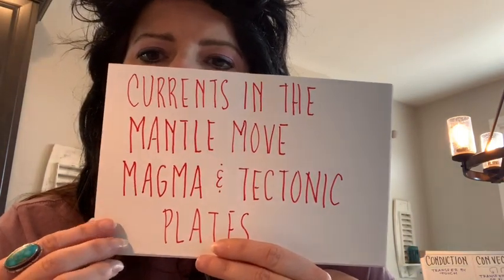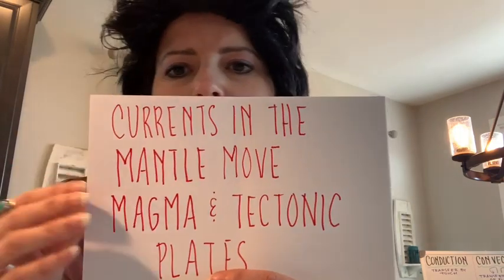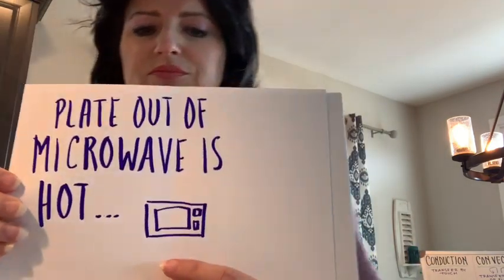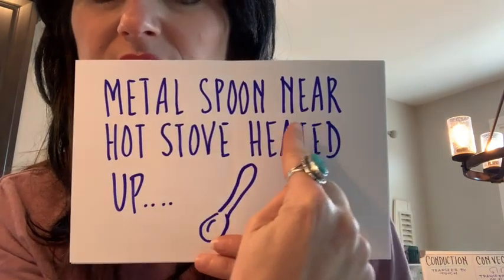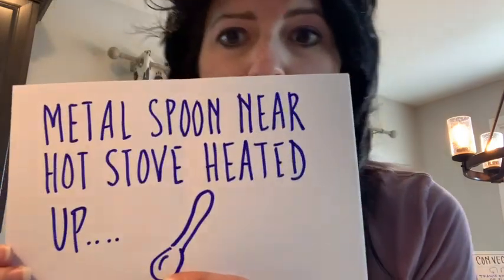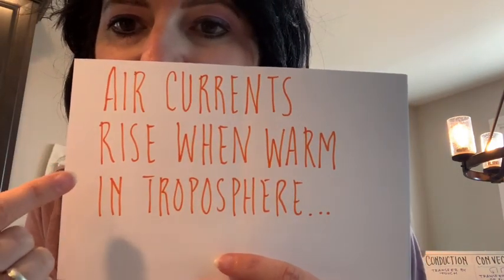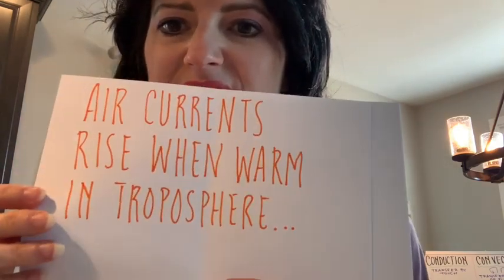How about this one: currents in the mantle move magma, therefore they're moving tectonic plates. Convection. How about plates under the microwave are hot? That's from radiation because the microwave gives off waves. How about a metal spoon near a hot stove that gets heated up because it's directly contacting it? That's conduction. What about air currents rising in the troposphere when they're warm? That's convection.